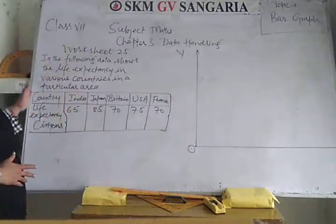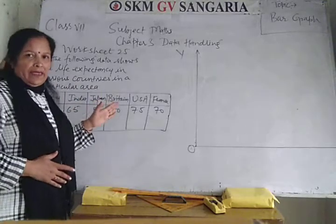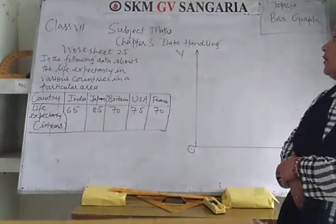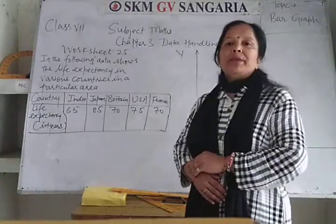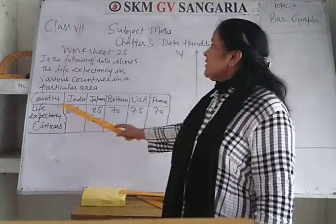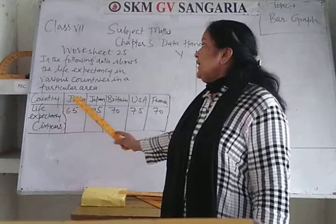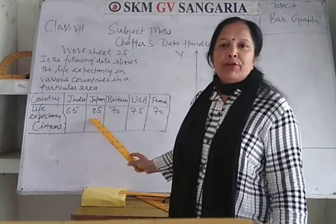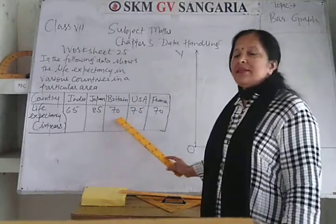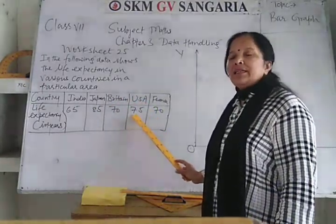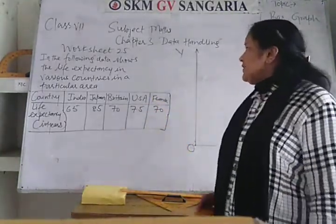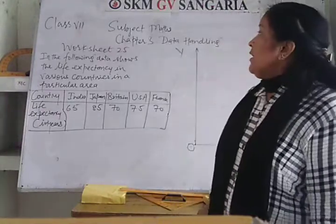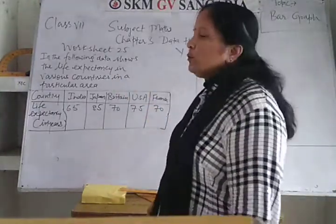The question is: the following data shows the life expectancy in various countries in a particular area. The countries are India, Japan, Britain, USA, and France. In India life expectancy is 65 years. In Japan it is 85 years. Britain is 70 years. USA is 75 years. France is 70 years. You are asked to draw the bar graph considering this information.